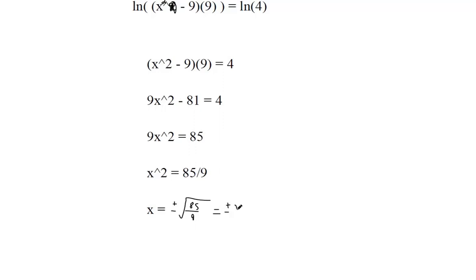The square root of 85 can't be simplified, and the square root of 9 is 3. So we get positive or negative square root of 85 over 3.